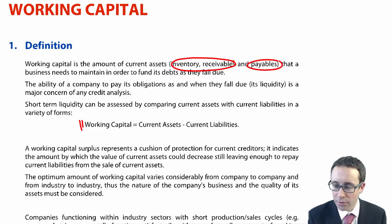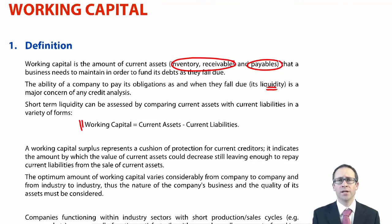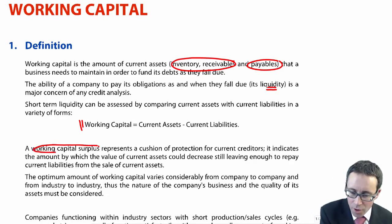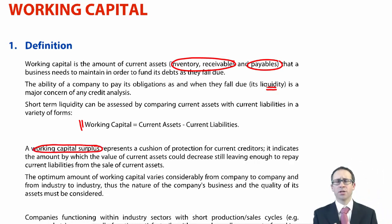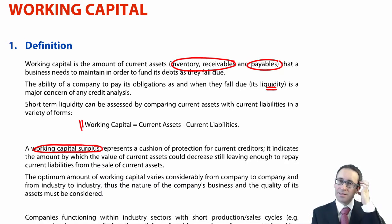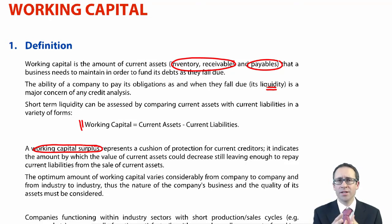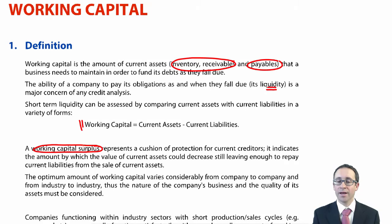The ability to pay off your debt as and when it falls due is referred to as your liquidity. In an ideal world, you would want to maintain a working capital surplus — more current assets than current liabilities — to ensure that if there are deficiencies in collection, there is still enough working capital or current assets elsewhere in the business to pay off your suppliers.